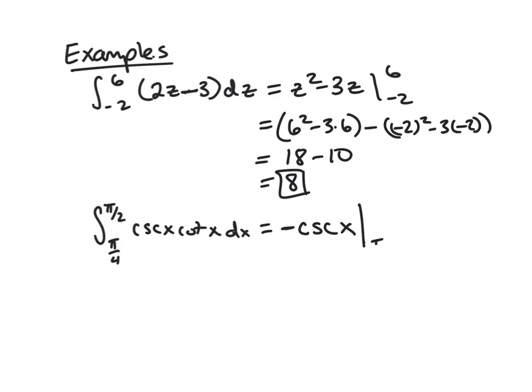Evaluating from π/4 to π/2: cosecant of π/2 is one, because sine of π/2 is one. Minus a negative, so plus cosecant of π/4. That's 1 over sine of π/4, which is 1 over √2, so this is √2. This is our answer.